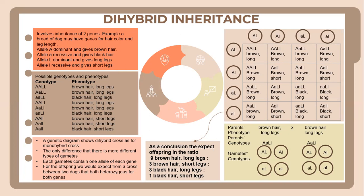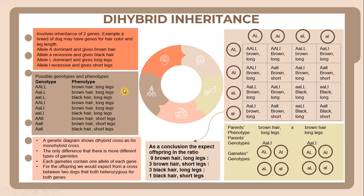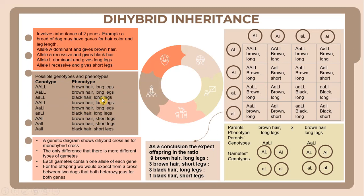For example, a breed of dog may have genes for hair color and leg length. The allele capital A is dominant and gives brown hair. Allele small a is recessive and gives black hair. Allele capital L is dominant and gives long legs, and allele small l is recessive and gives short legs. A genetic diagram shows the dihybrid cross similarly to a monohybrid cross, with each gamete containing one allele of each gene.